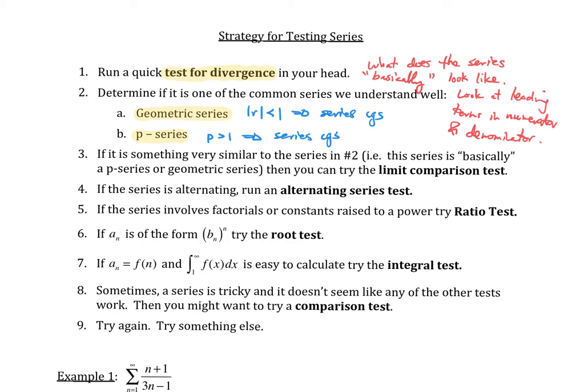I really like the limit comparison test because I don't mind taking limits and I'm into identifying what the series basically looks like. It's pretty easy to identify when a series is alternating because you should have either negative one to the n, or negative one to the n plus one, or negative one to the n minus one. When you have that, you can run an alternating series test.